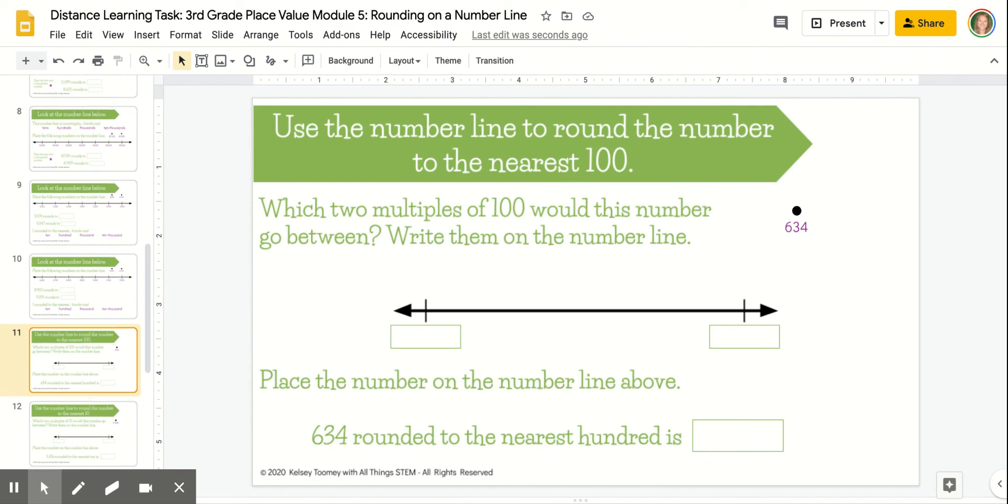Next, you'll move on to build your own intervals on the number line based on the number that you're trying to round. It's important to read the directions carefully. For example, this particular problem wants you to round this number to the nearest hundred.